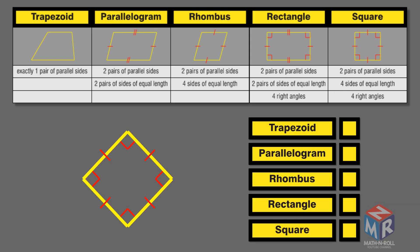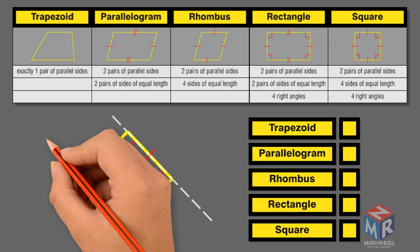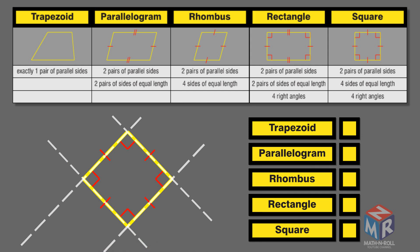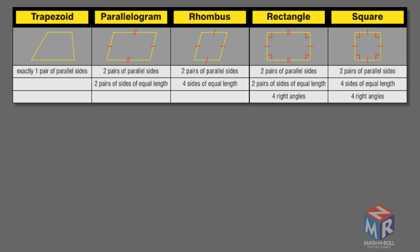Let's take a look at another example. It is not a trapezoid because it has two pairs of parallel sides. It is a parallelogram because it has two pairs of parallel sides and two pairs of sides that are equal in length. It is also a rhombus because it has two pairs of parallel sides and four sides of equal length. It is also a rectangle because it has two pairs of parallel sides, two pairs of sides of equal length, and four right angles. It is also a square because it has two pairs of parallel sides, four sides of equal length, and four right angles.